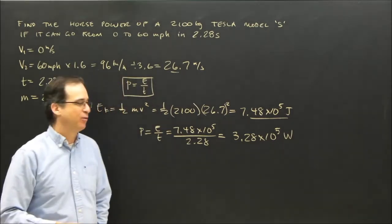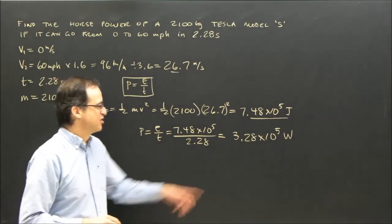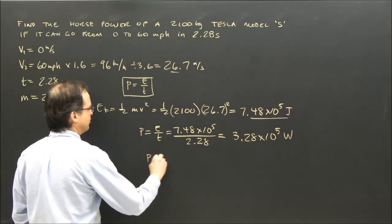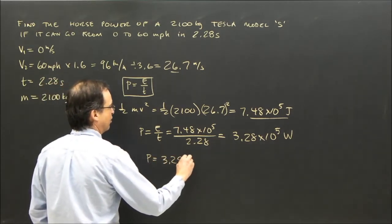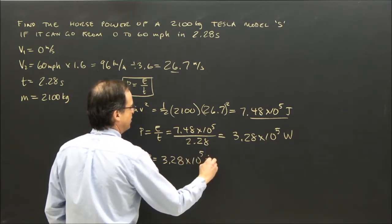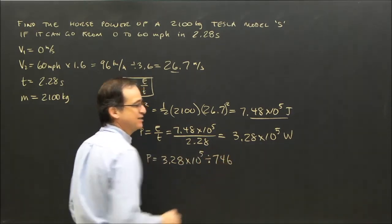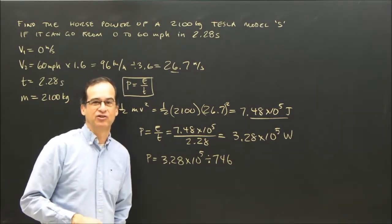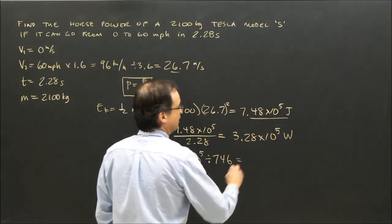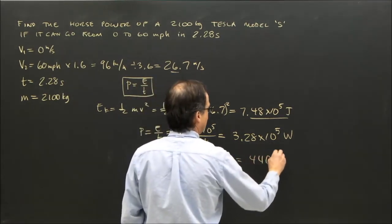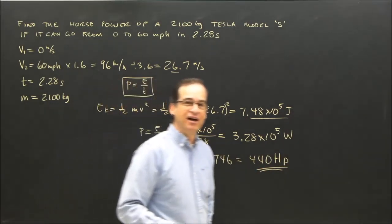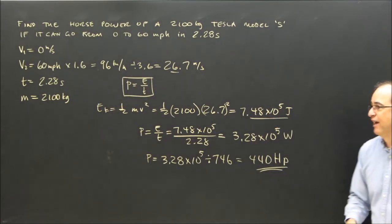The units for power are watts. Now I want to convert that into horsepower. We do a simple conversion by taking the power in watts and dividing by 746, which is the conversion factor from watts to horsepower. Doing that, we get 440 horsepower — that's how powerful a Tesla Model S is.